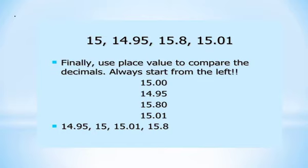Since 0 is smaller than 1, 15.00 (which is 15) is the next number. Then 15.01 comes next because comparing the two remaining numbers 15.80 and 15.01, the tenths digit 0 is smaller than 8, so 15.01 is smaller. The greatest number is 15.8. So our numbers in order from least to greatest are: 14.95, 15, 15.01, 15.8.